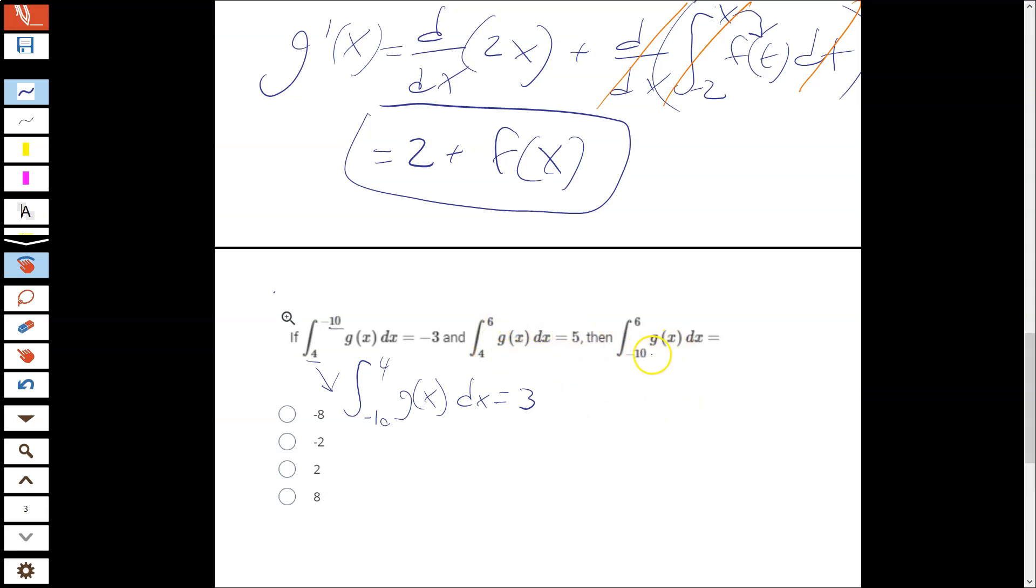And then, what else do we have? We have the integral from 4 to 6 is 5, and then we want the integral of the whole thing. Well, this integral from negative 10 to 6 is going to be equal to the integral from negative 10 to 4 of g plus the integral from 4 to 6 of g. Okay, so that would be just 3 plus 5 is 8. Easy enough. The only thing that you could have missed is having to rewrite that one.